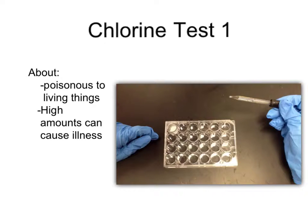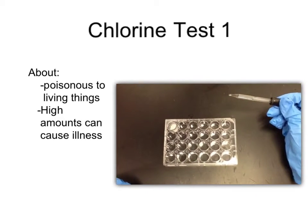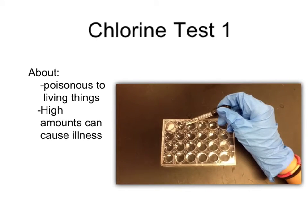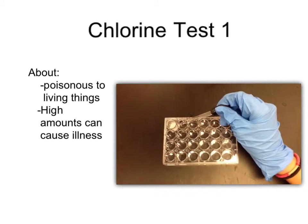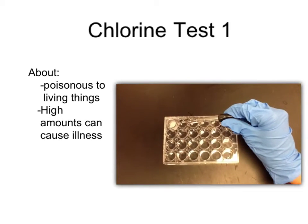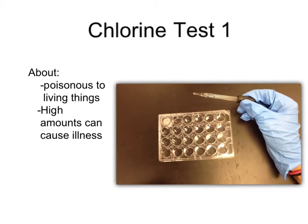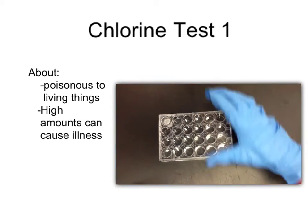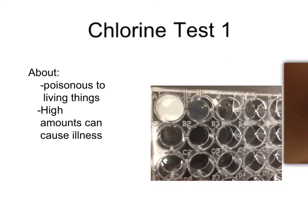In this test we will be testing chlorine. This is the control for chlorine. In this one we are going to add 20 drops of lake water to test. Then when we add the testing solution, there is very little precipitate, but you can see it a little bit. Here is a close up so you can see.